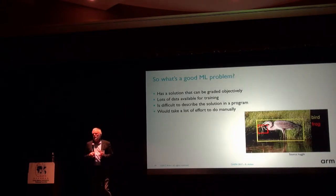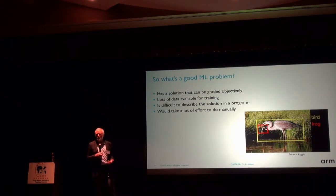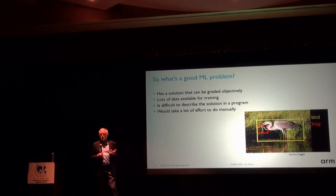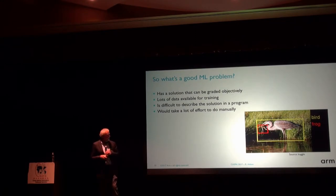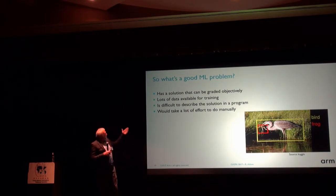When we think about machine learning, we need to think about what kinds of problems are actually good for it. They tend to have four basic characteristics. First, the solution can be graded objectively — there's a right answer. For example, what is this a picture of? Well, it's a picture of a bird. That's a right answer. It could also be a picture of a frog or a swamp — it's context-dependent, but there is a right answer in a given context.